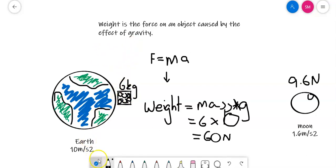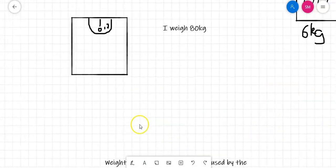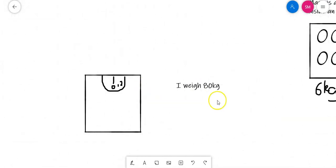If we go back to the start, back to the question of how much do we weigh, if we're on Earth, if our mass, we've decided that when we say we weigh 80 kilograms, that's actually a description of our mass, so I have a mass of 80 kilograms. How would I actually work out my weight?